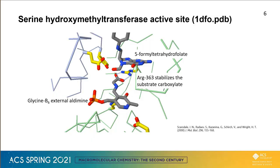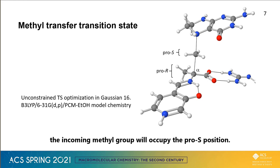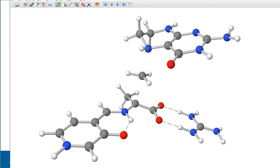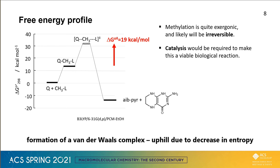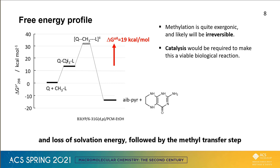I used Gaussian-16 to locate the methyl transfer transition state where the incoming methyl group will occupy the pro-S position. The plot of Gibbs free energy versus reaction progress shows initial formation of a van der Waals complex, uphill due to the decrease in entropy and loss of solvation energy, followed by the methyl transfer step itself.